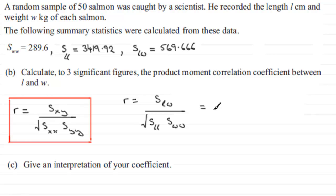we can see that this is just going to be, for SLW it's going to be 569.666, and we divide this by the square root of SLL, 3419.92, and we multiply this with SWW, 289.6. And whenever you're working out these product moment correlation coefficients, do remember that you can only expect to get a value between minus one and one inclusive, so you can always check to see whether your answer looks reasonable.